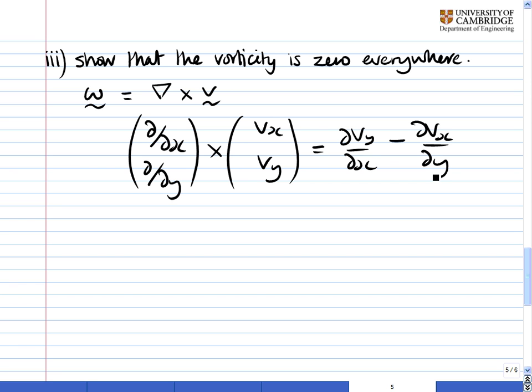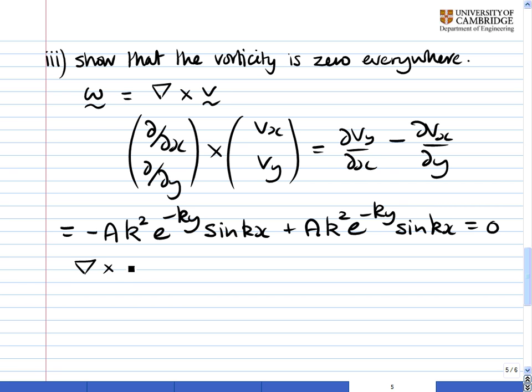And we can substitute in our values, our expressions for vx and vy again, and we find that we get minus ak squared e to the minus ky sine kx, that's dvy by dx, plus ak squared e to the minus ky sine kx, and that's equal to zero. So we have that the curl of v is equal to zero.